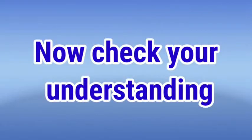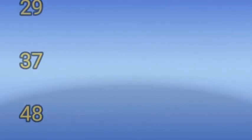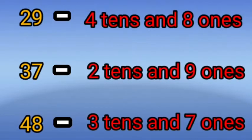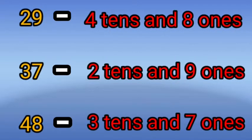Now check your understanding. For 29, 37, and 48: Is 29 four tens and eight ones? No. Is 37 two tens and nine ones? No. Is 48 three tens and seven ones? No.